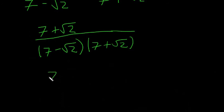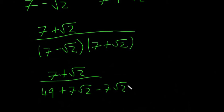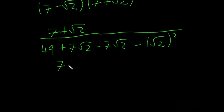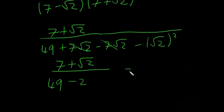So: 7 plus √2 on the top. On the bottom: 7 × 7 is 49. Then 7 × √2 is 7√2. Then minus √2 × 7 is minus 7√2. And minus √2 × plus √2 is minus (√2)². Those middle terms cancel — 7√2 minus 7√2 — so the middle cancels. 49 stays. And like above with the 3s, (√2)² is just 2, not 4. So we get minus 2, giving us 7 plus √2 over 47.